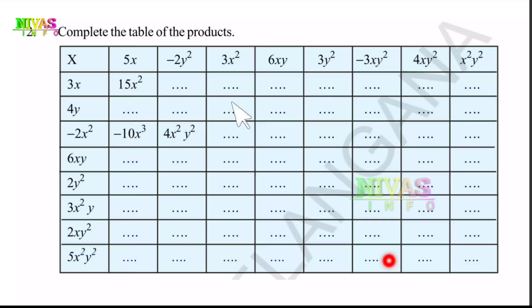After that, 3X into minus 2Y squared: this is plus and it is minus, that's why we have minus here. 3 into 2 is 6.